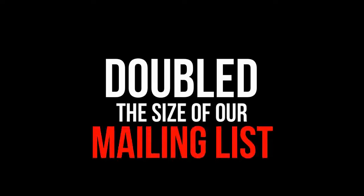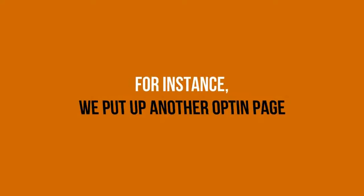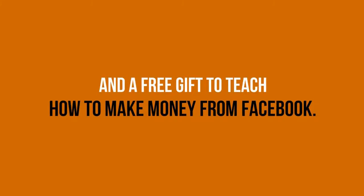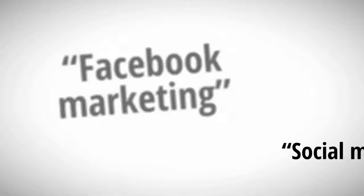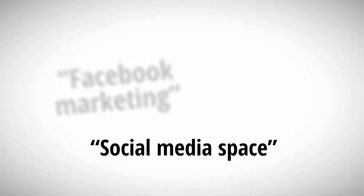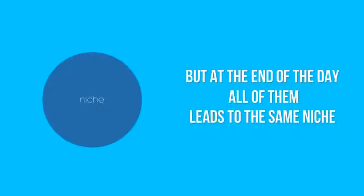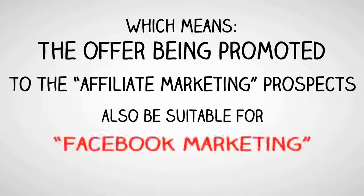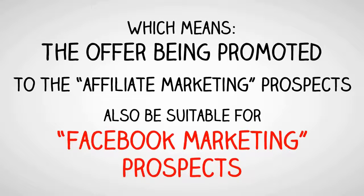Because this is such a simple idea, we have easily doubled the size of our mailing list. For instance, we put up another opt-in page and a free gift to teach how to make money from Facebook. This time, we are targeting Facebook marketing and the social media space, not affiliate marketing keywords — but at the end of the day, all of them lead to the same niche. Which means the offer promoted to affiliate marketing prospects would also be suitable for Facebook marketing prospects.